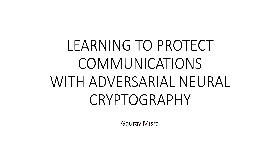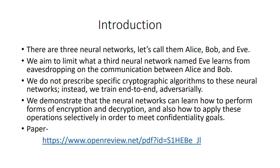Hello everyone. I am going to present on learning to protect communications with adversarial neural cryptography. You will get to understand what adversarial neural cryptography is as I proceed through the presentation. This is basically based on generative adversarial networks, GANs. In our setup there are three neural networks known as Alice, Bob, and Eve. Alice and Bob are communicating, and Eve is the one eavesdropping on the communication between Alice and Bob. Alice and Bob have to communicate without Eve being able to figure out what they are trying to communicate.